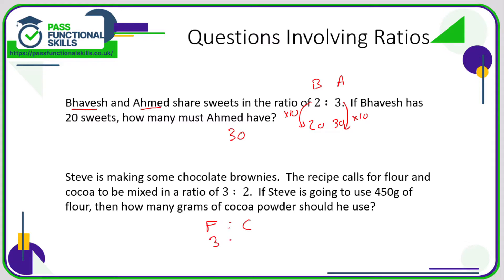We've been told he's using four hundred and fifty grams of flour, and we want to know how much cocoa is needed. I don't immediately know what to multiply three by to get four hundred and fifty, so I'll divide: four hundred and fifty divided by three is one hundred and fifty. So we're boosting the whole ratio by one hundred and fifty. The equivalent amount of cocoa is therefore one hundred and fifty times two, which is three hundred grams. The ratio is three to two, and scaling it up one hundred and fifty times gives the four hundred and fifty we were given and the three hundred grams of cocoa we've worked out.